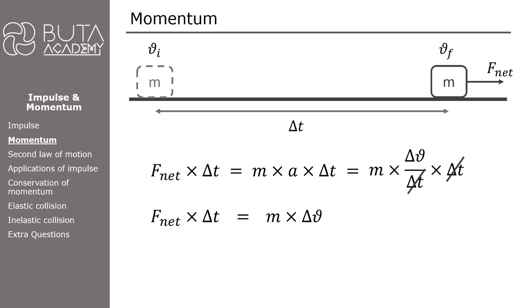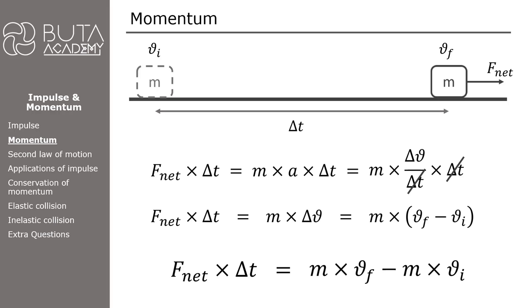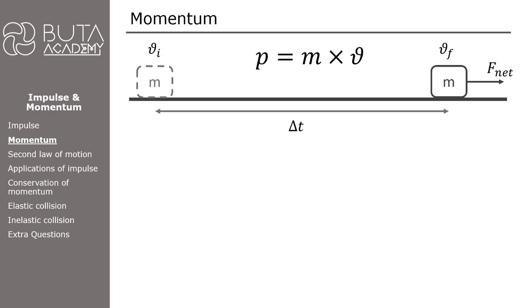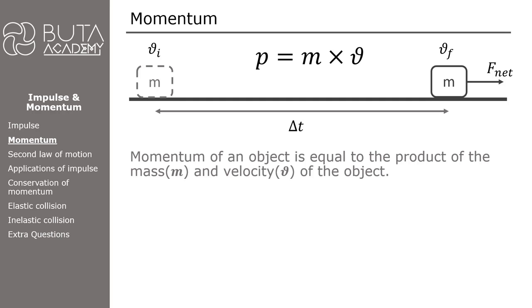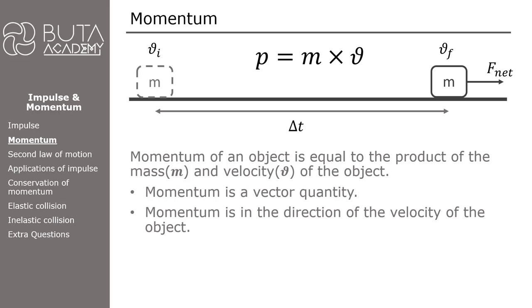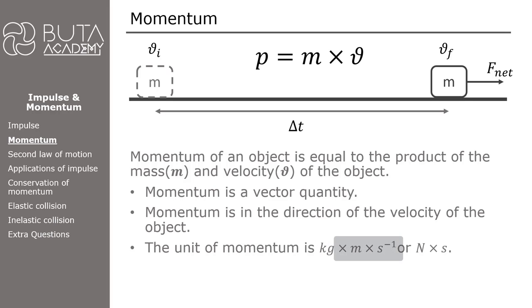Delta means final value minus initial value of any quantity. So impulse equals mass times final velocity minus mass times initial velocity. The expression mass times velocity is known as the momentum of an object. Momentum of an object is equal to the product of its mass and velocity. Momentum is also a vector quantity, always acting in the direction of the object's velocity. The unit of momentum is the same as impulse: kilogram meters per second or Newton times second.